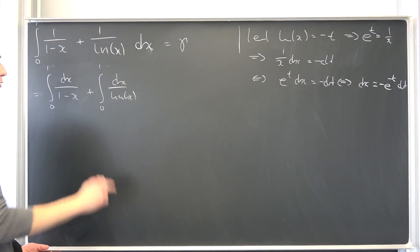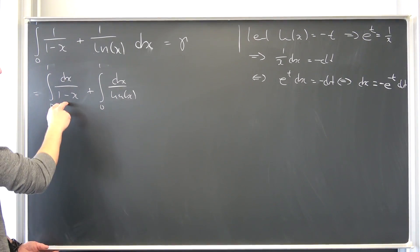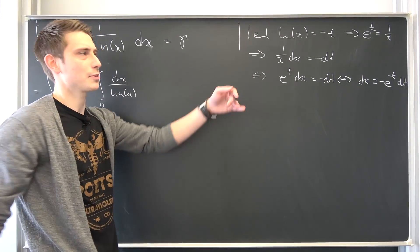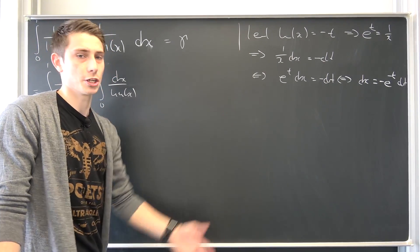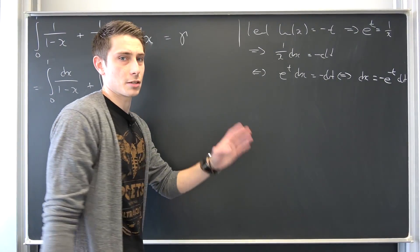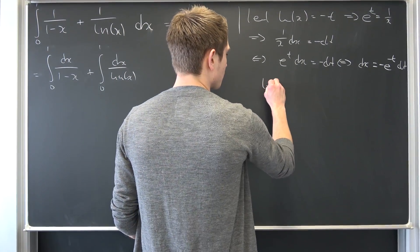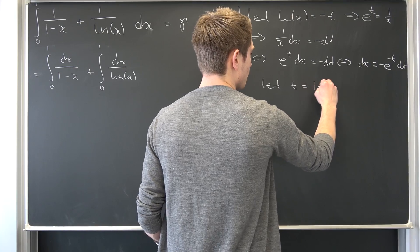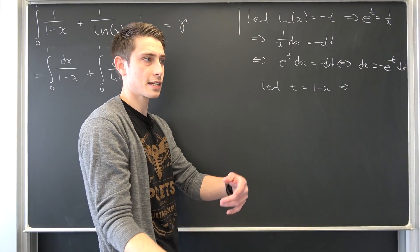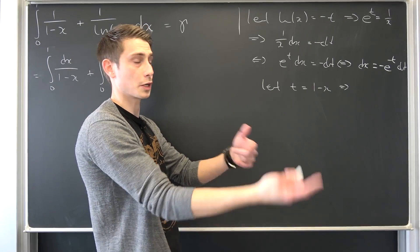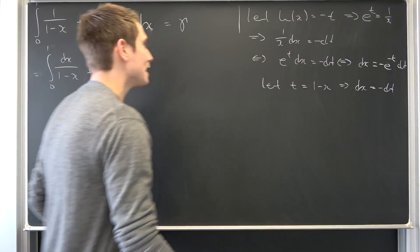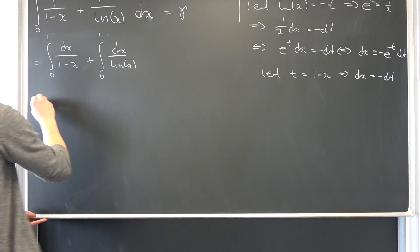First integral out of the way. For this second one, why not let 1 minus x equal t? I'm going to choose the same variable because I want to bring stuff together later and I don't want to change variables once again. So let t equal 1 minus x, meaning dt is nothing but negative dx. We can multiply both sides by negative 1 to get that dx is nothing but negative dt.